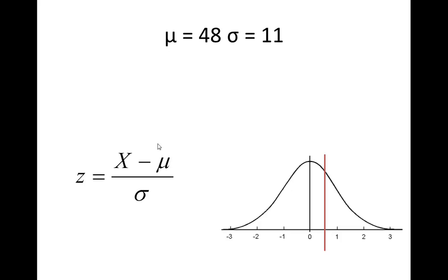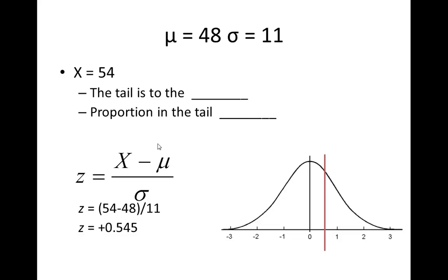Let's do another example. Say we have a normal distribution with a mean of 48 and a standard deviation of 11. Indicate whether the tail is to the right or left, and find the proportion in the tail. We have an x of 54. The tail is the smaller proportion, and it's to the right. We plug in our numbers: 54 is our value, our population mean is 48, and our standard deviation is 11. We get a z-score of positive 0.545.